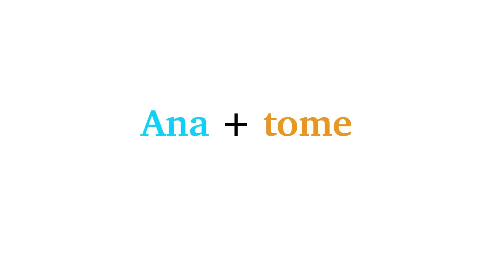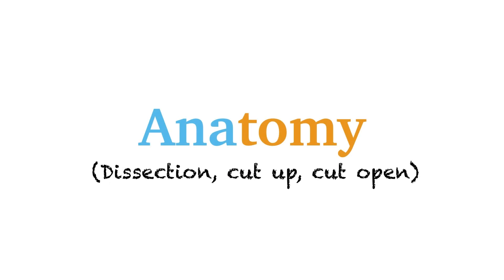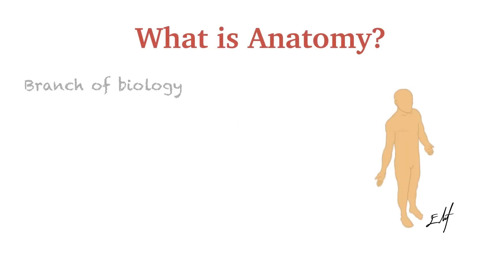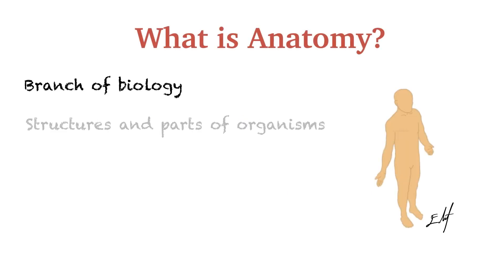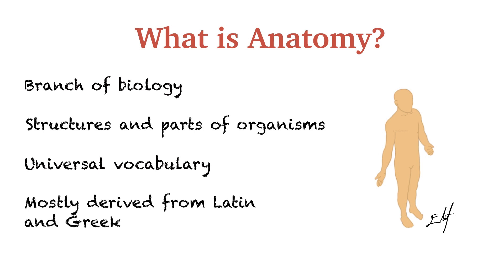Anatomical Terminology. As a term, anatomy is basically formed by two Greek words: 'ana', which means 'up', and 'tome', which means 'to cut'. The anatomy term formed by combining the words ana and tome means dissection, to cut up, or to cut open. Anatomy is a branch of biology that studies the structures and parts of organisms. It has a universally accepted vocabulary in medicine and contains a major part of medical terminology. Most anatomical terms are derived from Latin and Greek.